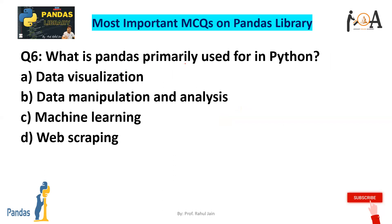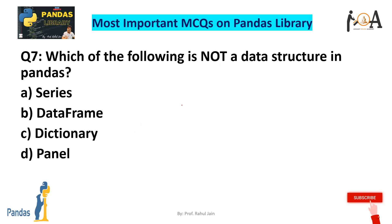Question 6: What is pandas primarily used for in Python? Pandas is basically used for data manipulation and data analysis — this is the main purpose of the pandas library in Python. Question 7: Which of the following is not a data structure in pandas? Series, DataFrame, and Panel are all data structures in pandas, but dictionary is not. So option C is the correct answer.